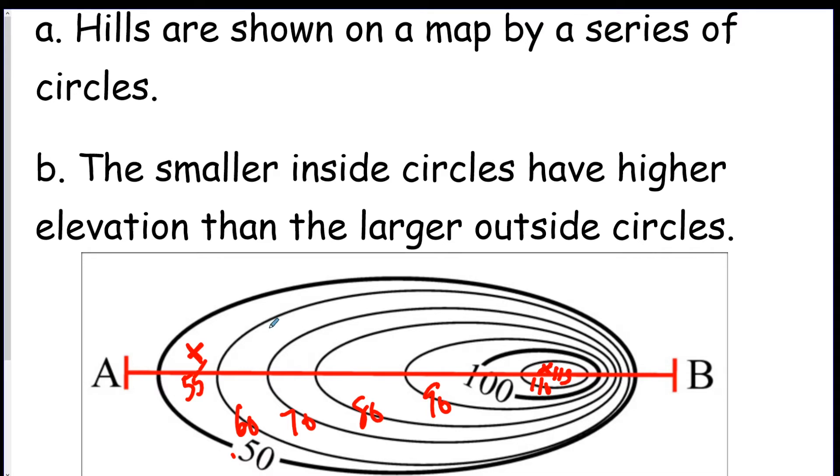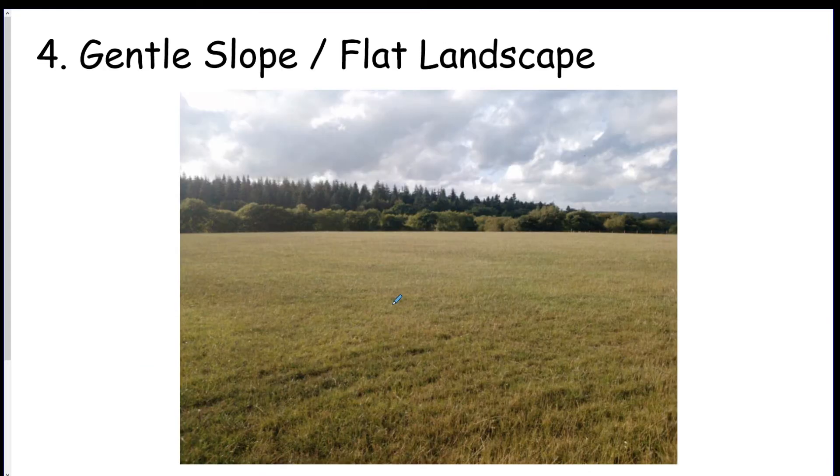So here's a question for you. Give me an estimate of what B could be. What elevation would a person at letter B possibly be? Well, B is in between the 80 and the 90, so anywhere between that is good. So 81 through 89. It can't be 80 because then B would be on the line. And it can't be 90 because then B would be on this line. It's in between 80 and 90. So 81 through 89, anywhere in there is good.